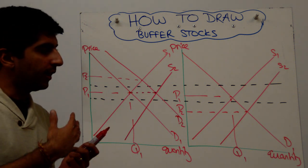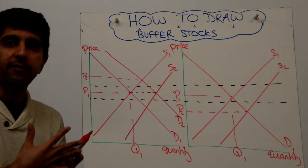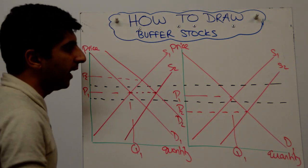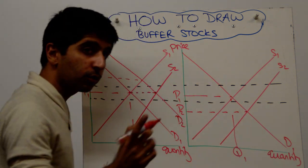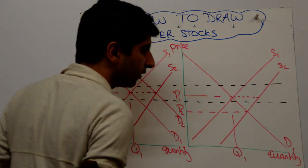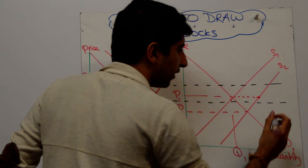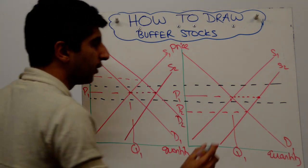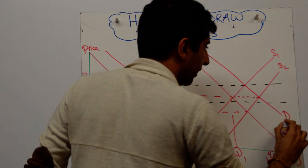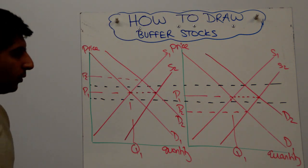So what they would do is they would actually buy up some of this excess stock from the market, thus shifting demand to the right and taking it back to P1. So the way to draw this is to extend your P1 line across and to make sure that your new demand curve cuts supply through that red dot. Something like that would do the job and label that D2.